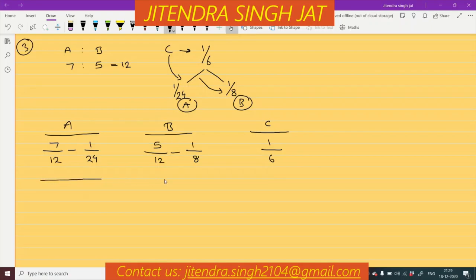Let's calculate LCM. So here it will come 24. 12×2=24, 2×7=14, 14 minus 1 equals 13/24.